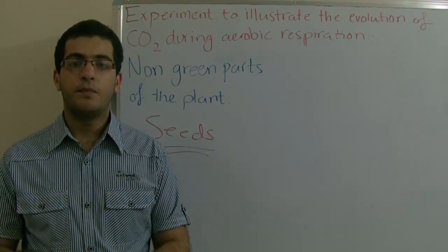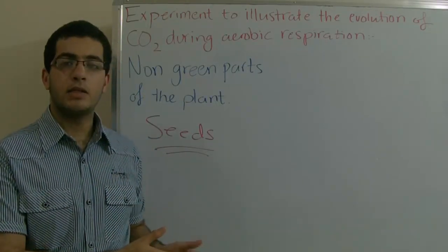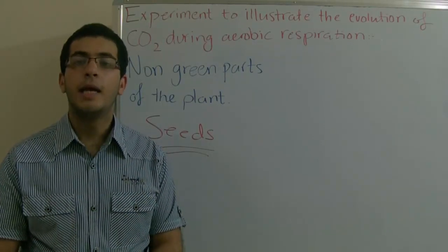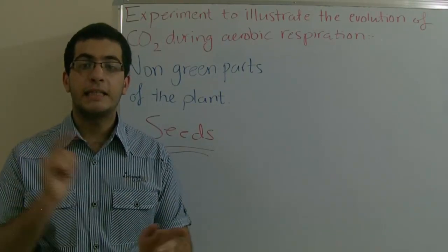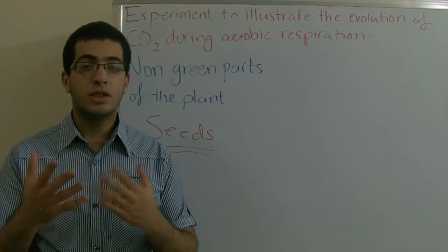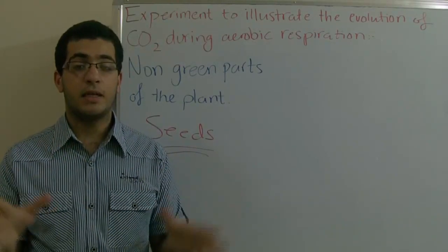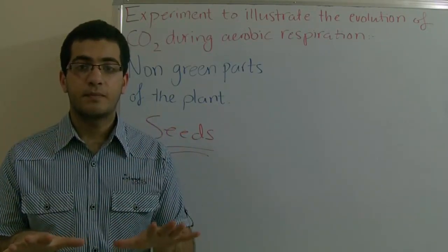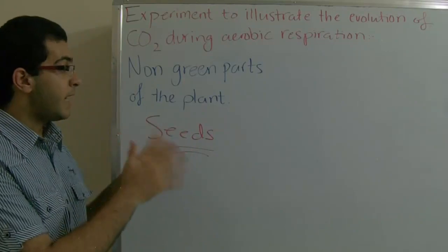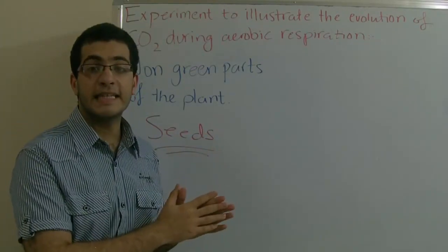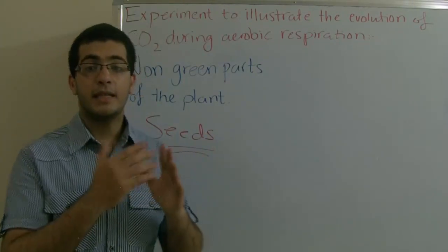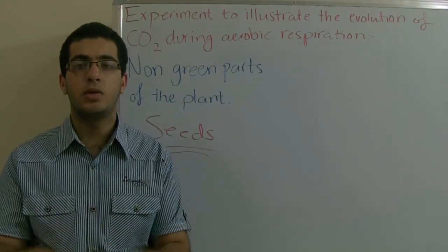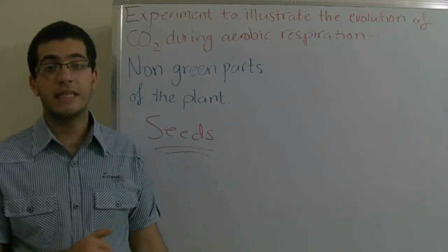In apparatus 2 we have germinating seeds. These germinating seeds respire actively and produce carbon dioxide. But because sodium chloride does not absorb carbon dioxide, the gas exchange happens among the germinating seeds and the volume stays constant, because an equal amount of carbon dioxide is produced as oxygen is absorbed. So no changes happen.